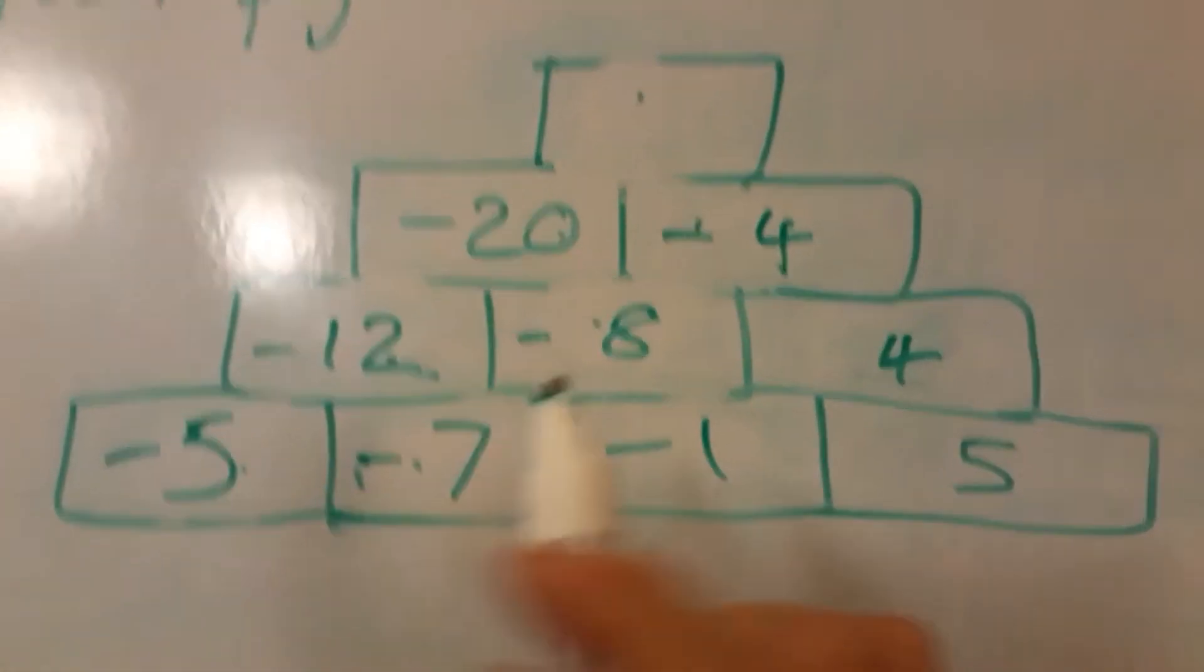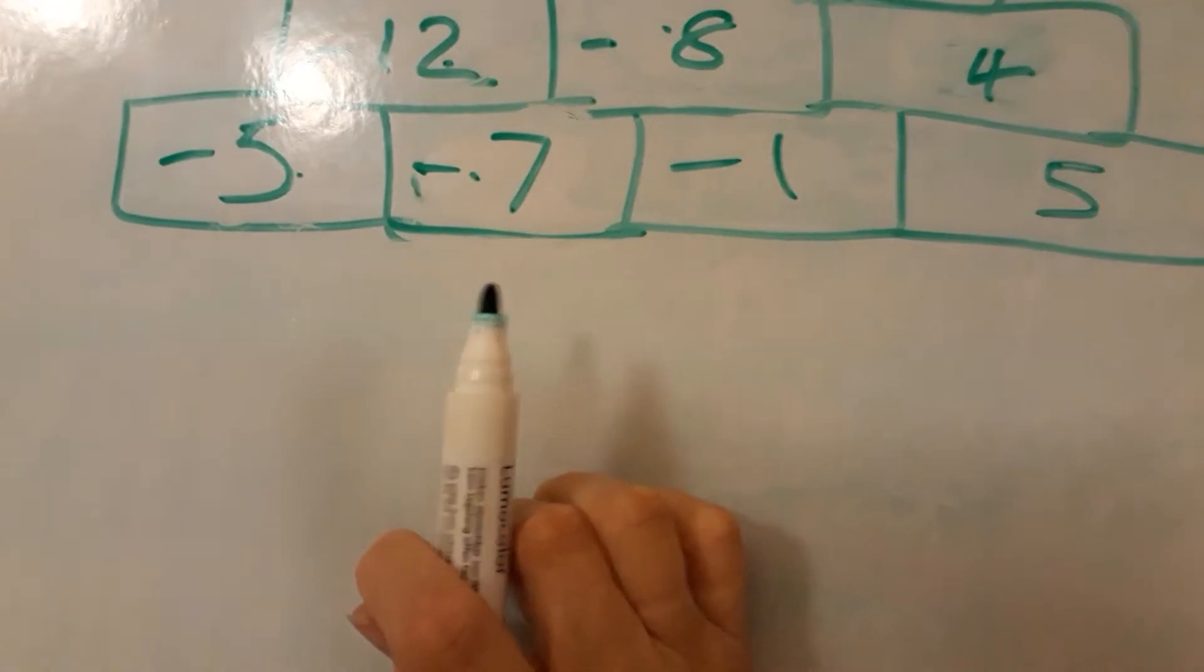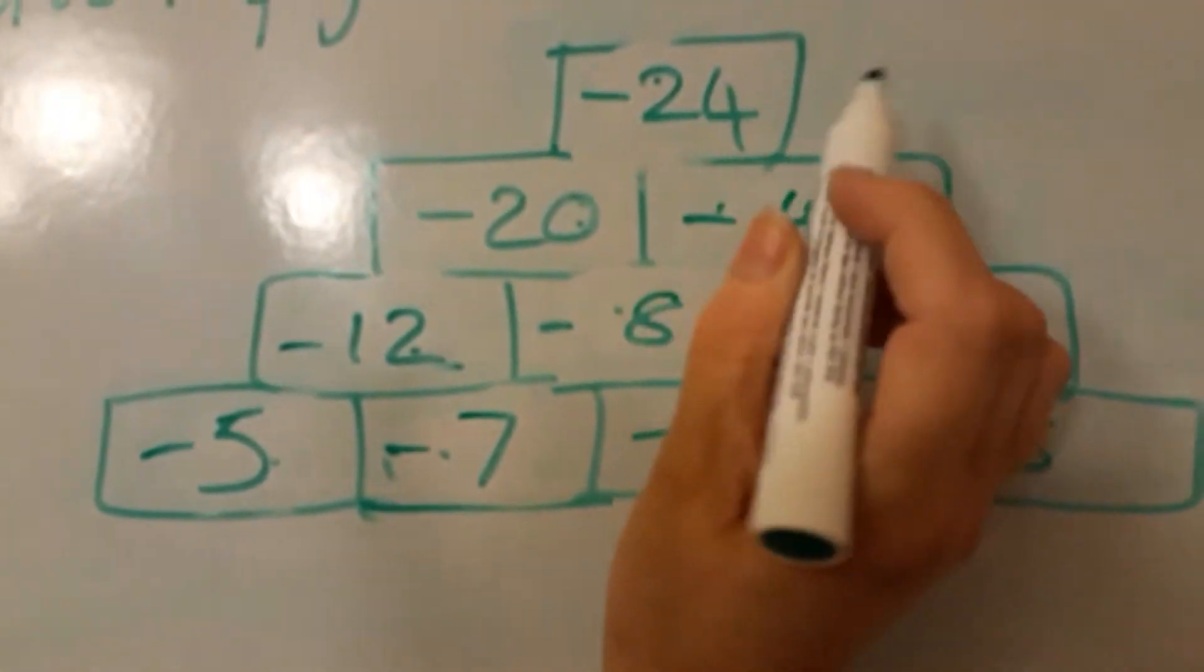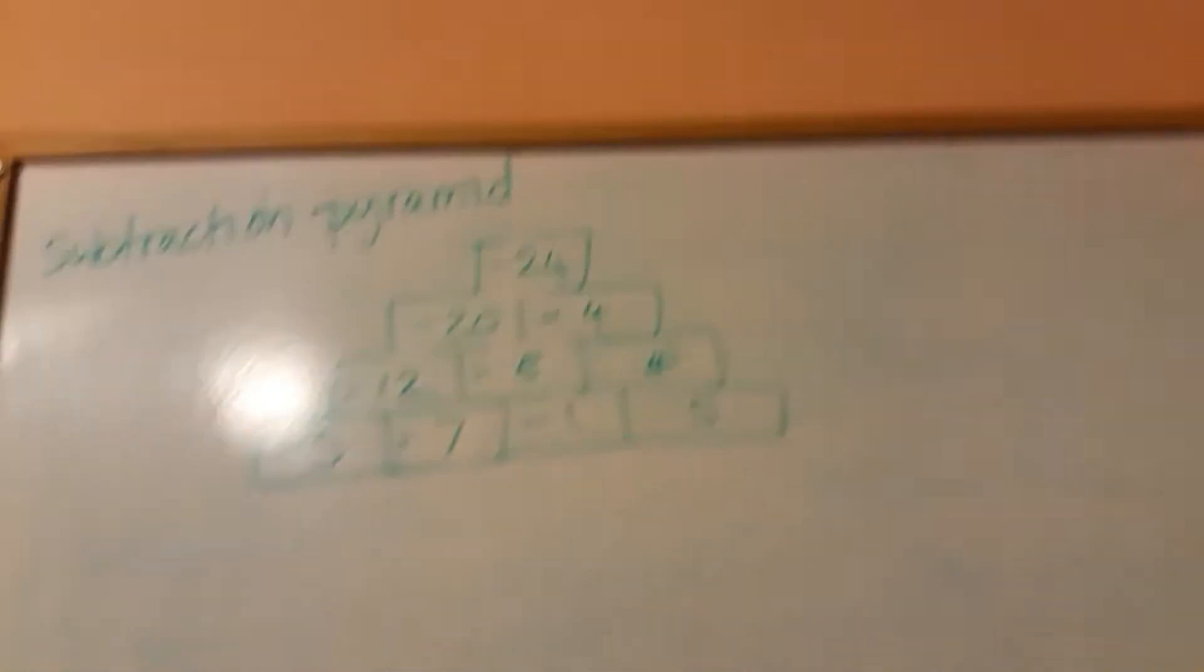And then what's this one? And so minus 24. So see, they're quite easy.